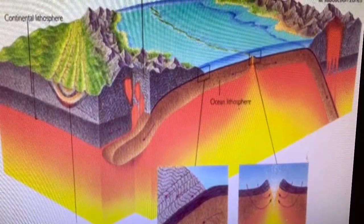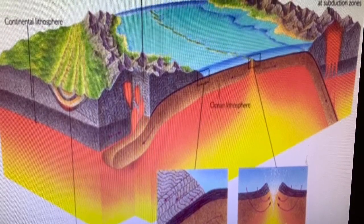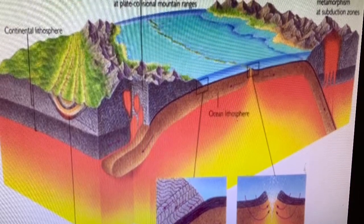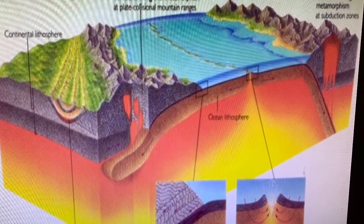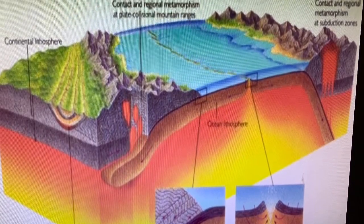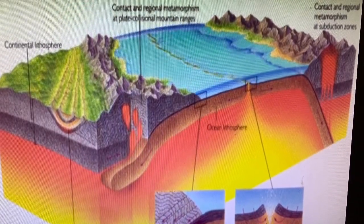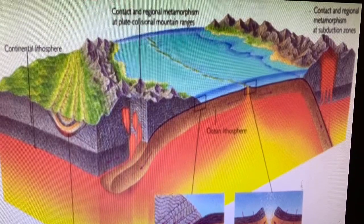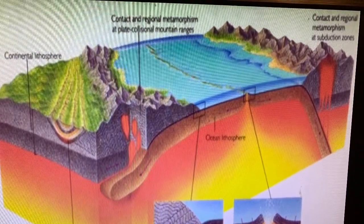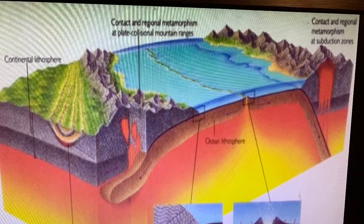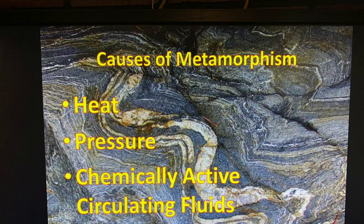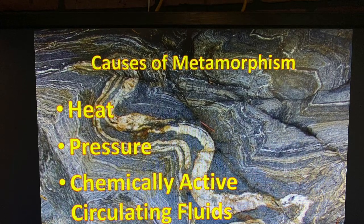Metamorphism can happen because of a variety of things: you can bury a rock deep underground, subject it to rising magma intrusions, or have tectonic plates slamming into each other. All of these can put a rock under extreme conditions and therefore start the process of metamorphosis. The three main causes of metamorphism are heat, pressure, and chemically active fluids.